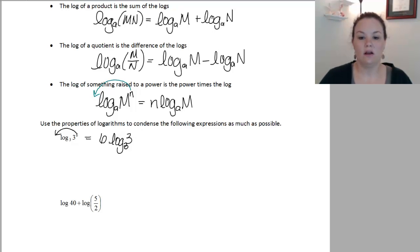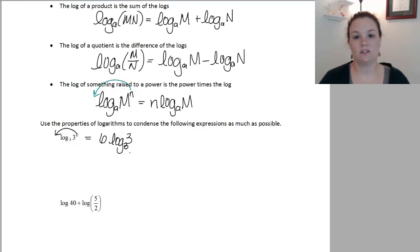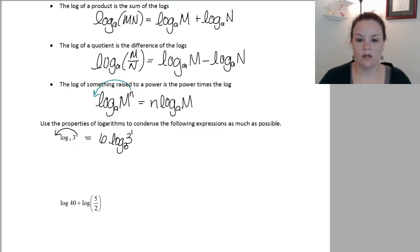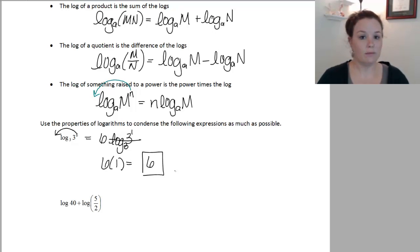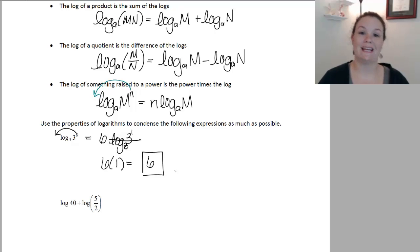Notice that log base 3 of 3 is just 1, because the only exponent you'd raise 3 to in order to get 3 is 1. In other words, log with base 3 cancels out an exponential base 3. So when those cancel, I'm left with 6 times 1, which is just 6. So now we have two ways to solve this: we can just cancel log base 3 of 3 and get 6, or we can bring that 6 down first and then get rid of log base 3 of 3. Either way works.